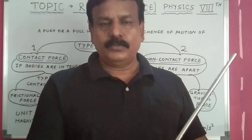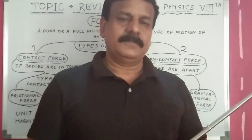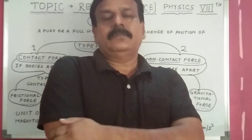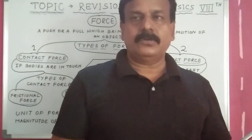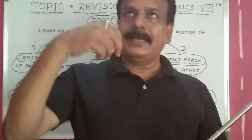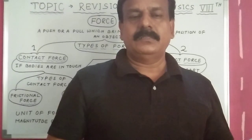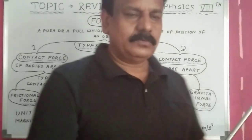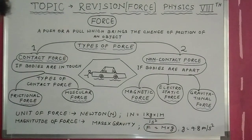If you throw any object it comes back down — the reason is the force applied by the Earth pulling every object. This force was discovered by Newton while he was sitting under an apple tree. An apple fell, and he wondered why it goes down and not up. He investigated and found the reason: gravitational force. These are the three types of non-contact force.